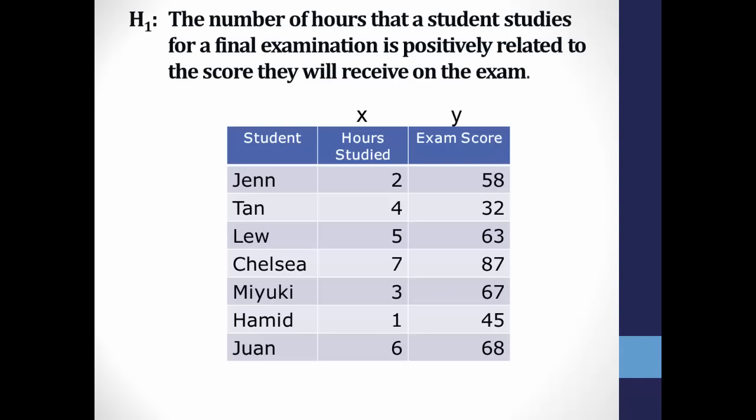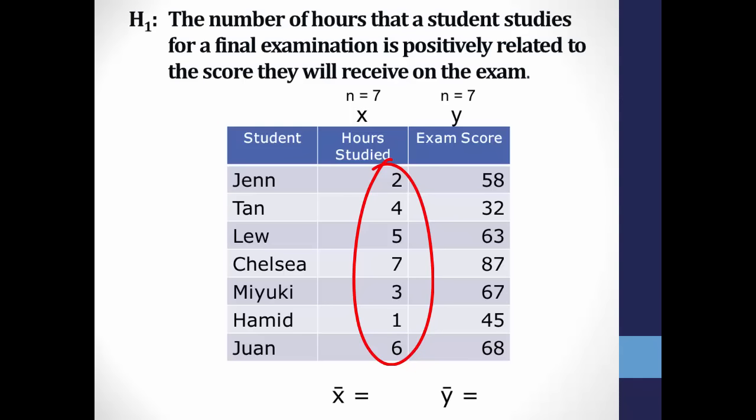In total you have 14 observations: 7 for the x variable and 7 for the y variable, and you'll need this to calculate degrees of freedom. You can calculate the mean for each set of numbers. For hours studied: 2 + 4 + 5 + 7 + 3 + 1 + 6 equals 28, divided by 7, which is 4. The mean of x is 4.